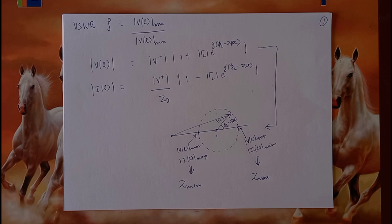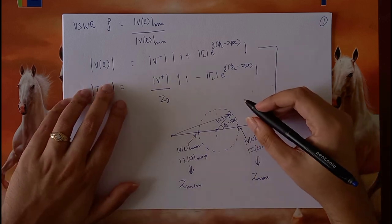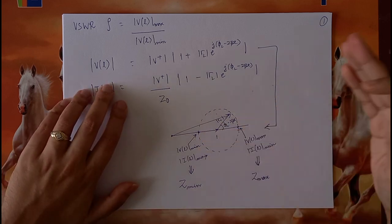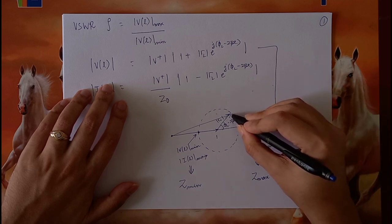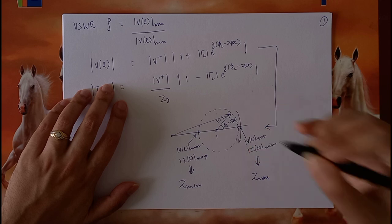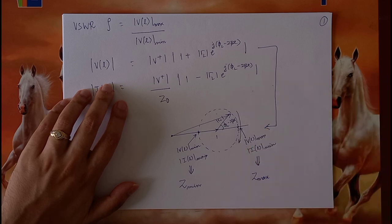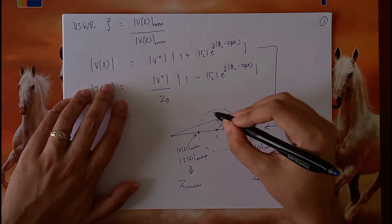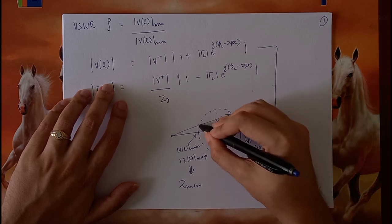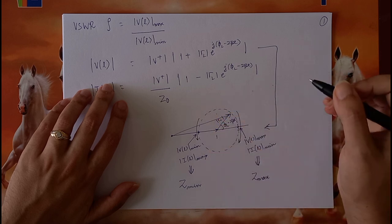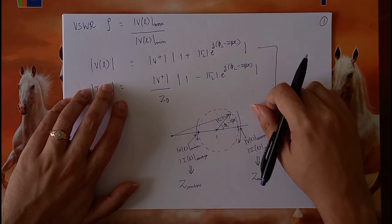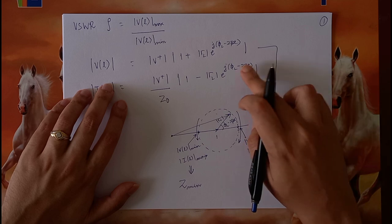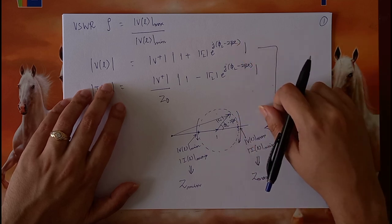When the vector tip moves clockwise, it is moving away from the load. When the vector tip moves counterclockwise, it is moving toward the load, because of the plus and minus L conventions.